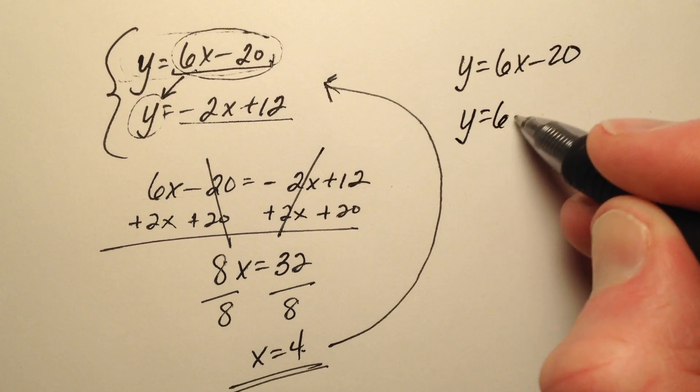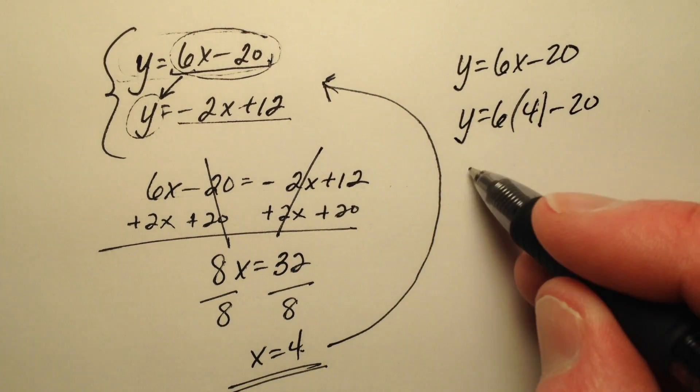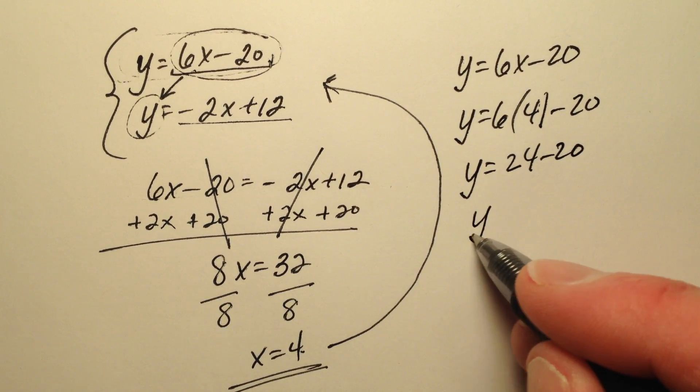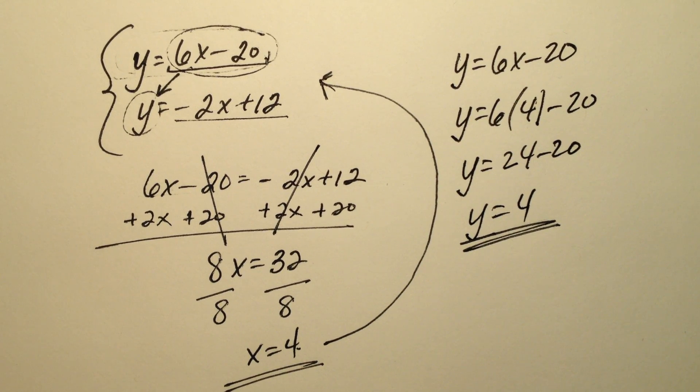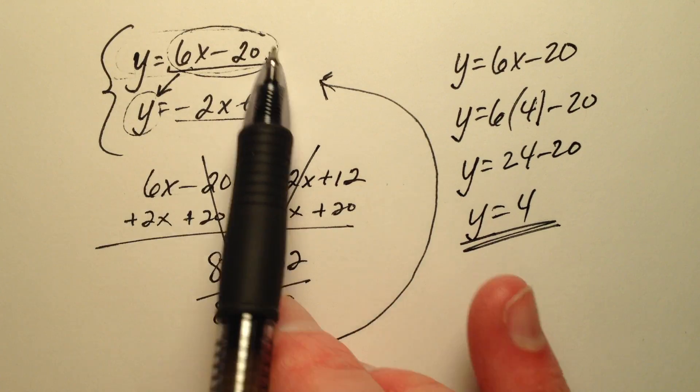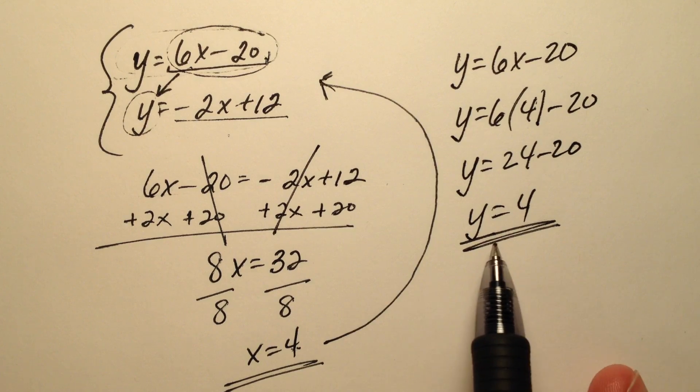So y equals 6 times my x value which is 4 minus 20. 24 minus 20 is 4. So the ordered pair that will function as the solution to this linear system is 4, 4.